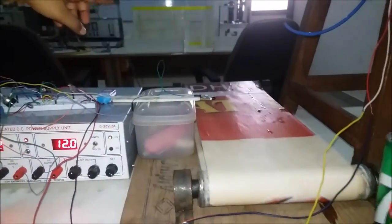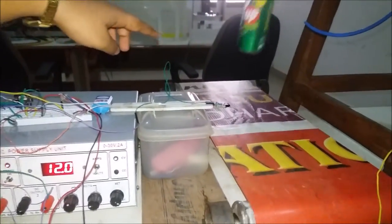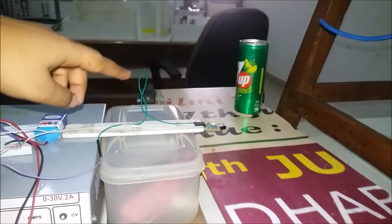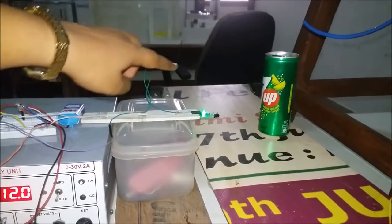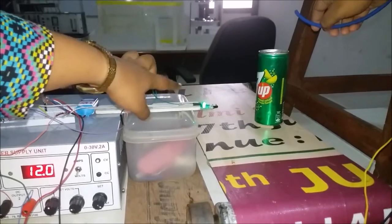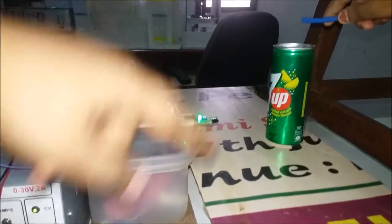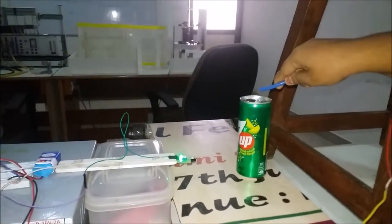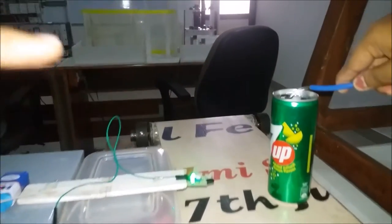Whenever a bottle is placed on the conveyor belt, now the object has been sensed by the IR sensor. Now the conveyor belt is also stopped after 7 seconds of delay.